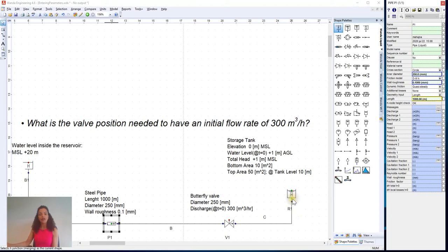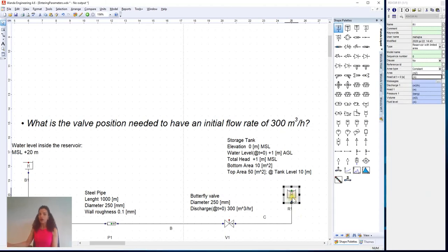Now we have the storage tank, which is found at elevation zero. It has an initial water level of 1 meter, so that is the initial head. We put it as 1, and its surface area varies according to the height.